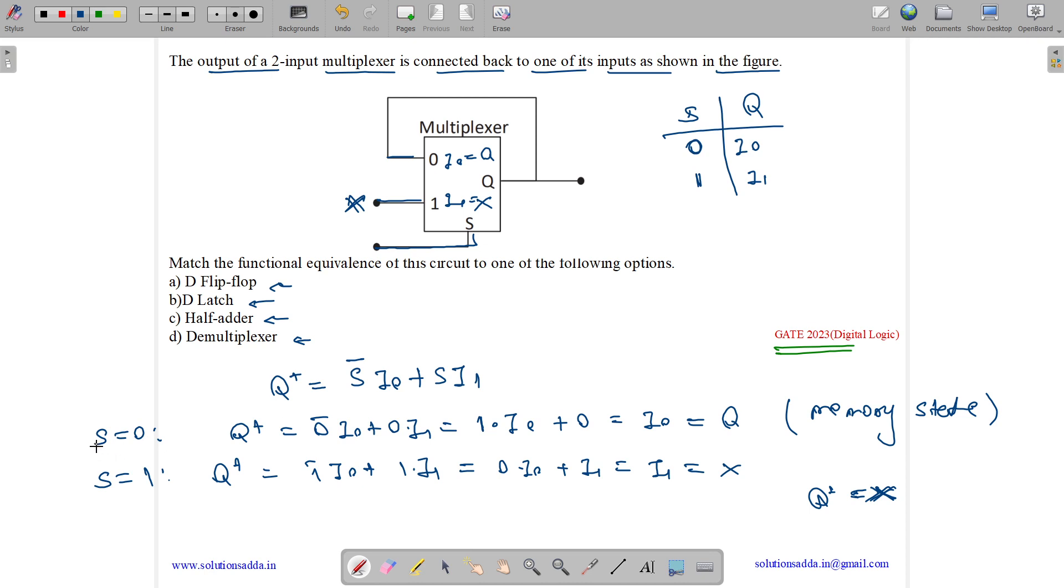As here you can see that either we can have a D flip-flop or a D latch. So a D latch is level triggered and D flip-flop is edge triggered. Here you can see that on s equals 0 and s equals 1, this s is basically acting as a clock. And on 0 to 1 it's changing the output. Thus it is level triggered. And on 0 it is having a memory state. Thus answer is D latch, option b.